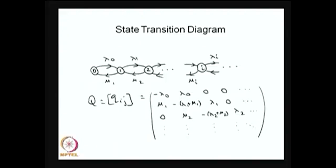The time spent in state 1 before moving to any other state is the minimum of the time spent in state 1 before moving to state 2 and the time spent before moving to state 0. Both are exponentially distributed with parameters λ₁ and μ₁ respectively, and since they are independent, the minimum — the waiting time in state 1 — is exponentially distributed with parameter λ₁ + μ₁.